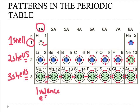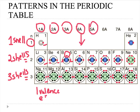Group one has one valence electron, and then group two has two valence electrons. Group three, if you count the red dots, you have three. Group four will have four valence electrons. Five has five, six, seven, and eight.